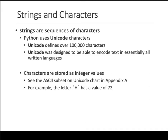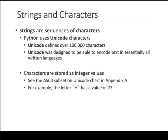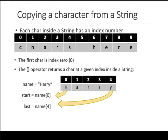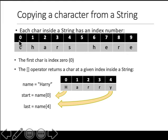Strings are nothing more than a sequence of characters. Those characters are Unicode - Python uses Unicode, though there is also something called ASCII code. A string is basically stored as a sequence of characters starting from index 0. So Harry is stored with H at index 0, a at index 1, and so on.